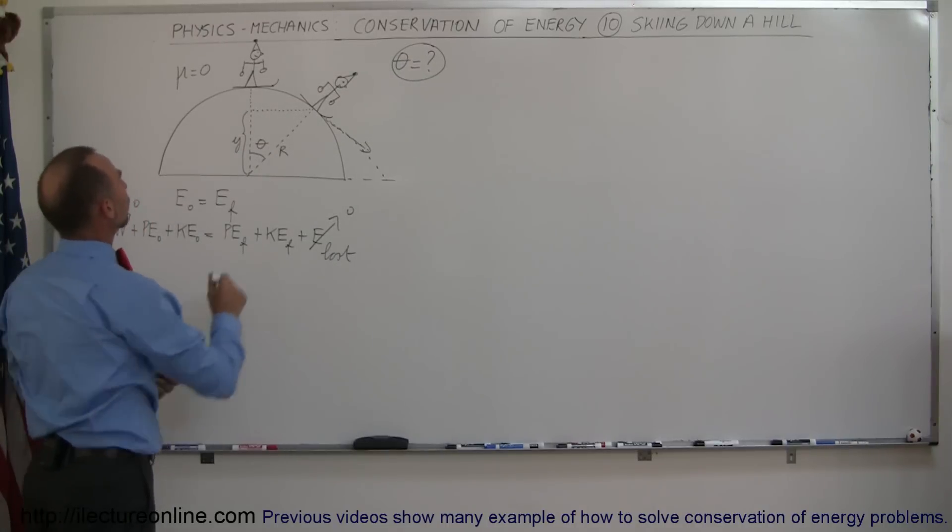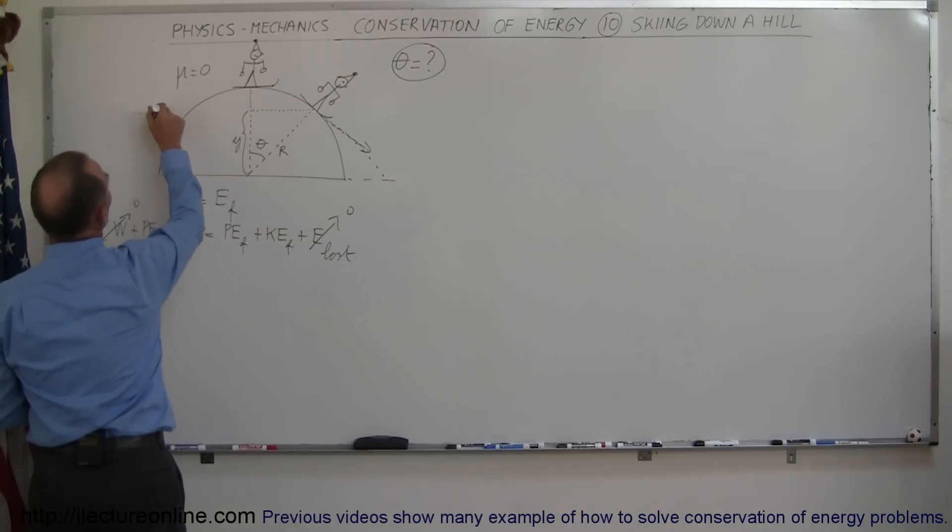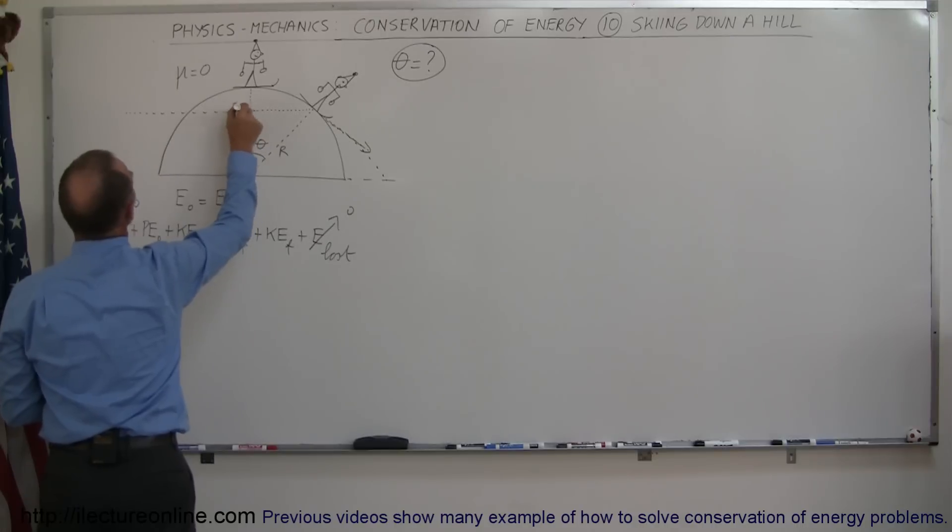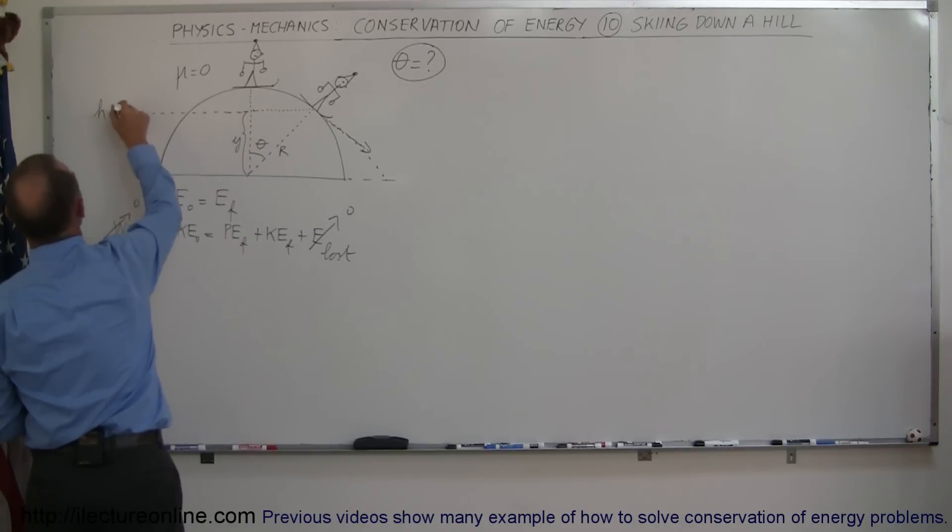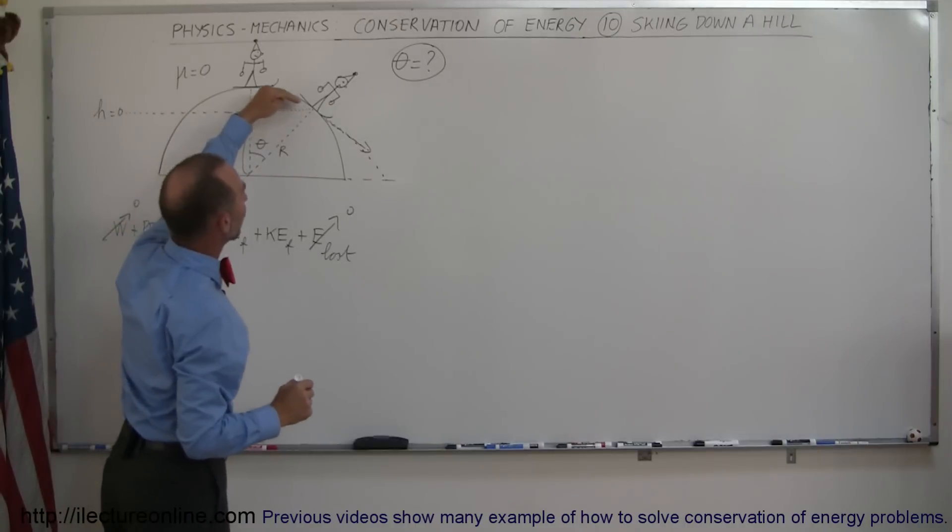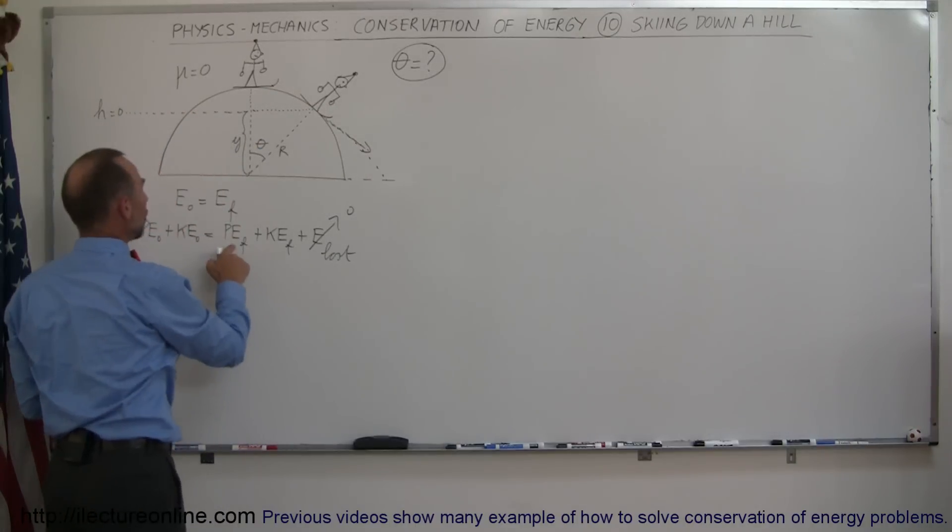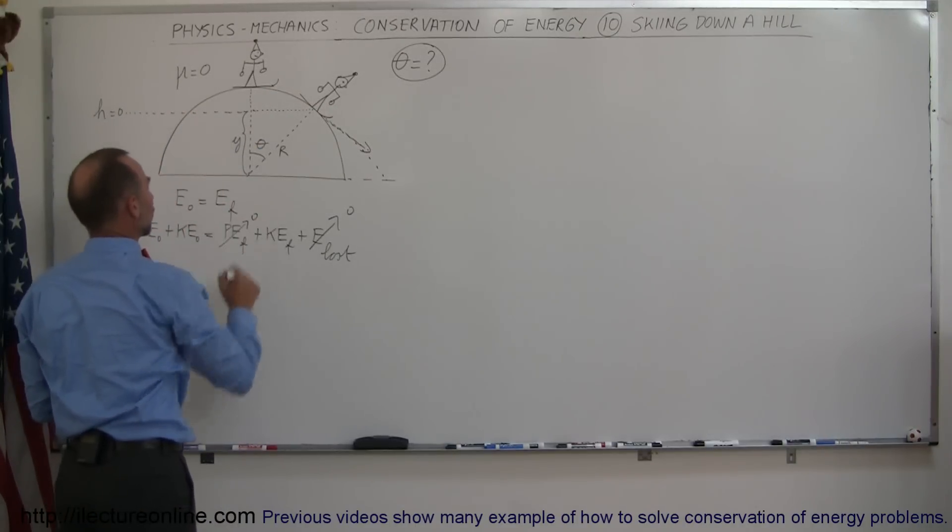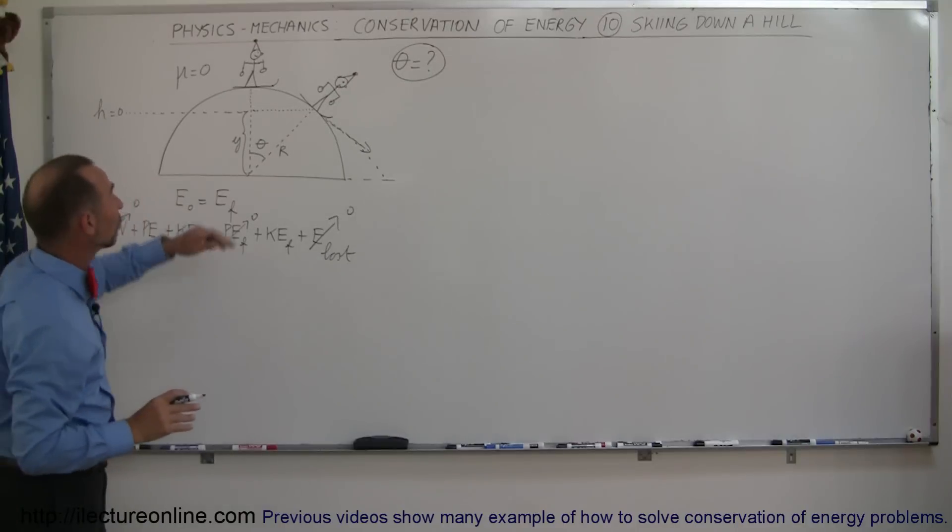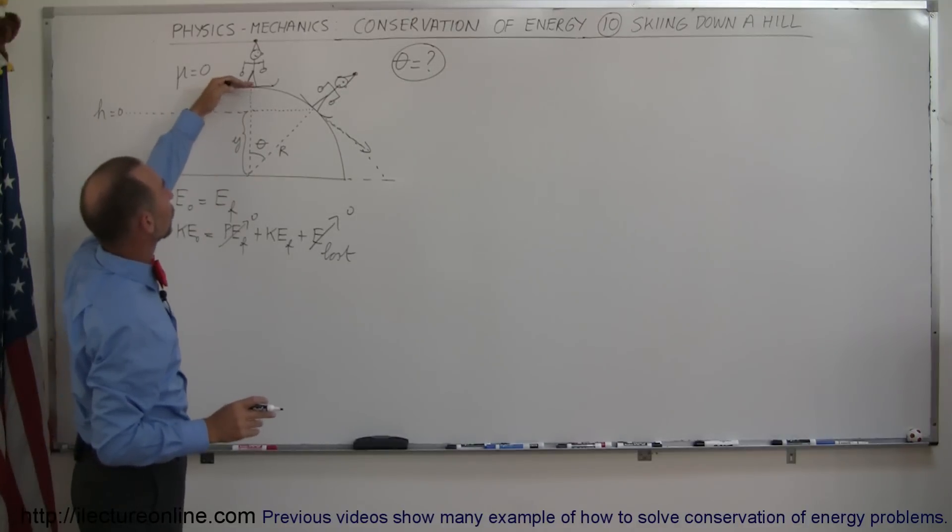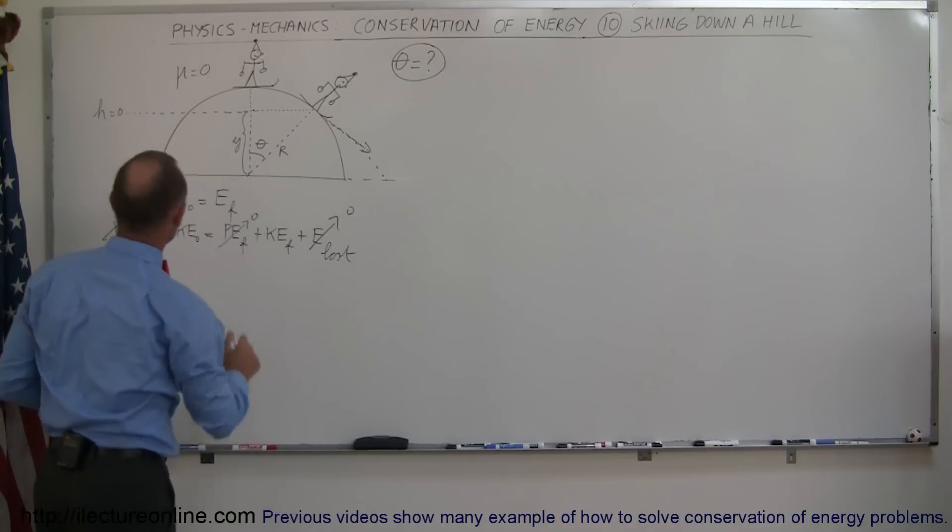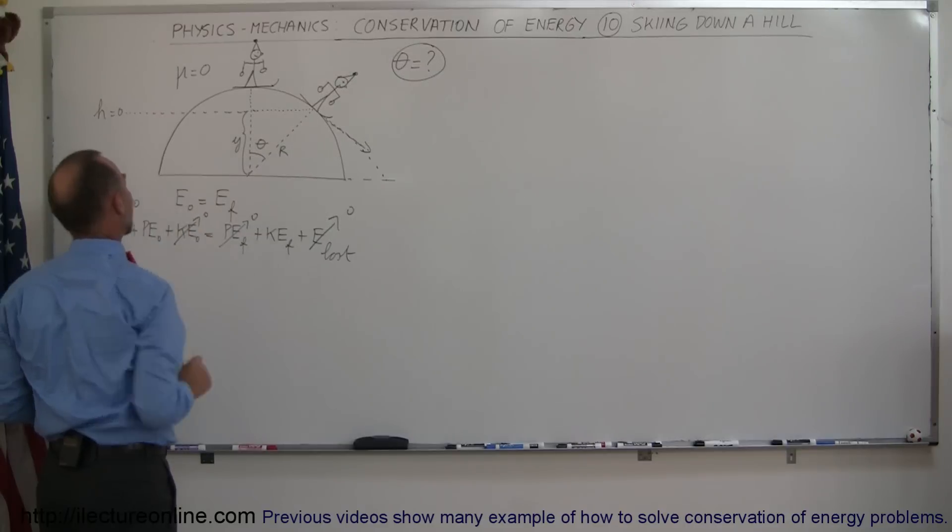Now let's call this the zero height position. So this we're going to call h is equal to zero, which means that when the skier gets to the point where he leaves the ski hill, there's no potential energy, so we can call that potential energy final. And then we assume that the skier starts with virtually no velocity at the top of the hill, so that means there's no initial kinetic energy as well. So this then becomes the potential energy initial equals the kinetic energy final.